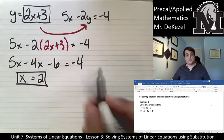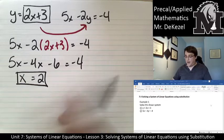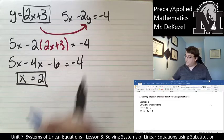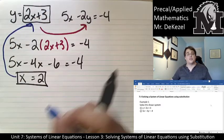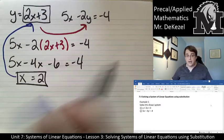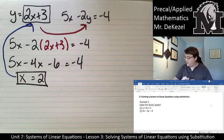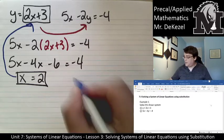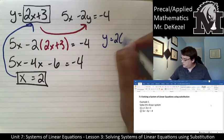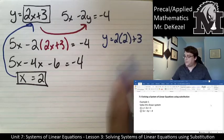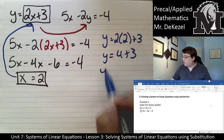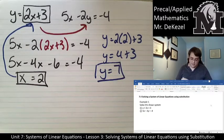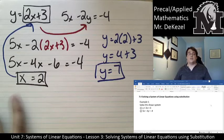So x is equal to 2. Now I can take this x value and because I know that x equals 2, I can plug it into my original equation to find out what y actually is. So let's do that. If x is 2, then y is equal to 2 times 2 plus 3. Y is equal to 4 plus 3. And as far as I know, 4 plus 3 is 7.